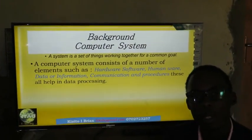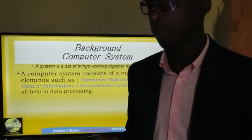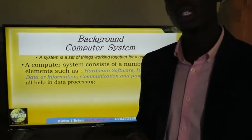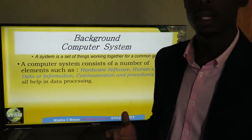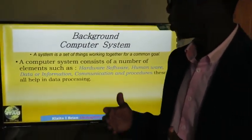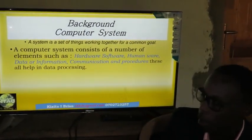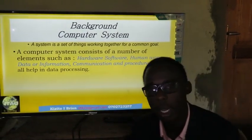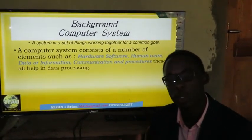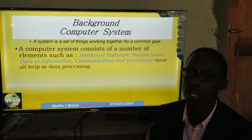Computer hardware first of all comes from what we call a computer system. A computer system is a collection of related entities that may include hardware, software, humanware, among others. All these components are supposed to come together to help in one goal, that is data processing.